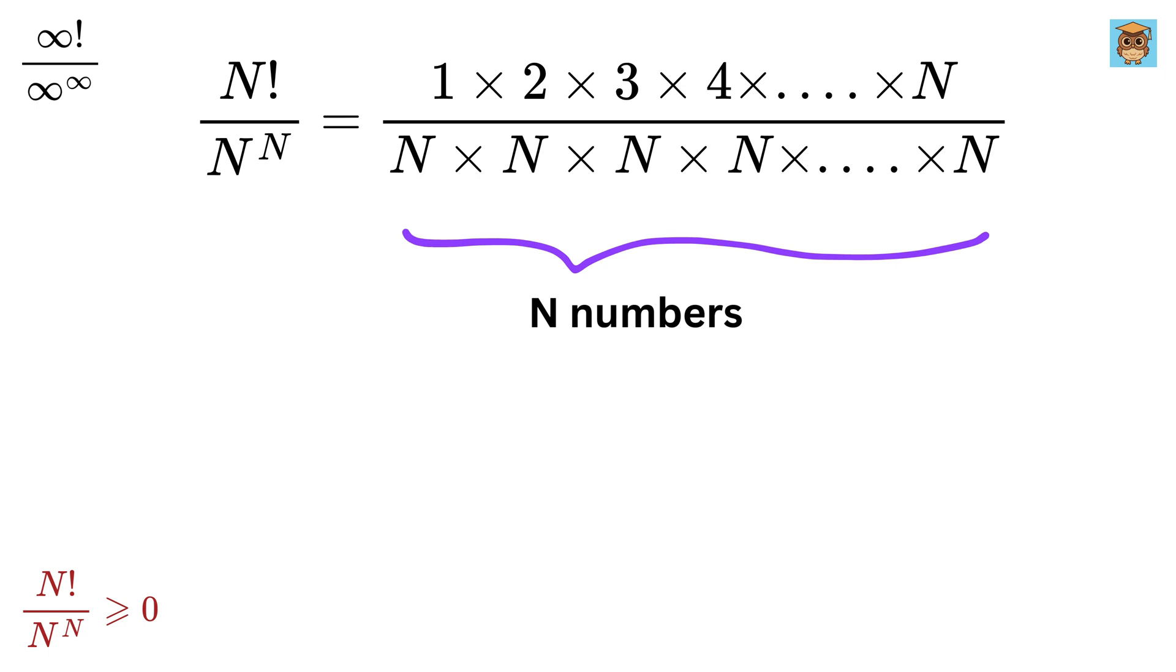So, we can write this separately as 1 over n multiplied by 2 over n, then multiplied by 3 over n, then 4 over n, and so on up to n over n. Look at this ratio.